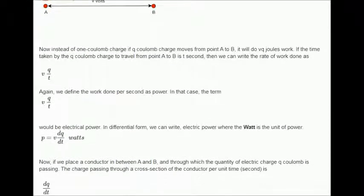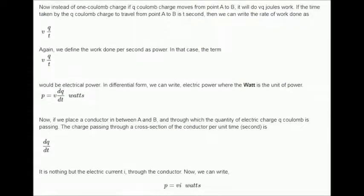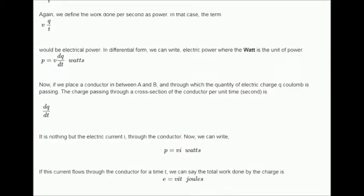Now, if we place a conductor in between A and B, and through which the quantity of electric charge Q Coulomb is passing, the charge passing through a cross-section of the conductor per unit time (second) is, it is nothing but the electric current I through the conductor.